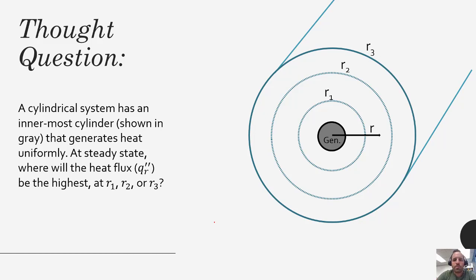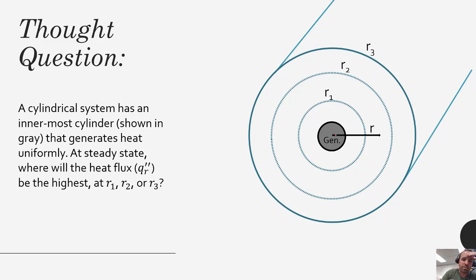Let's take a moment to reflect. Consider a cylindrical system where the innermost cylinder, shown in gray, generates heat — this could be a nuclear rod surrounded by cladding, or a reaction occurring inside. The question is: if we have this generation term, at steady state, where will the heat flux q-double-prime sub r be the highest? Will that occur at r equals r1, r equals r2, or r equals r3? Go ahead and hit pause while you think about this.